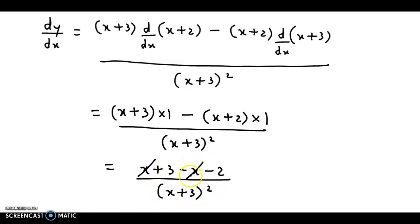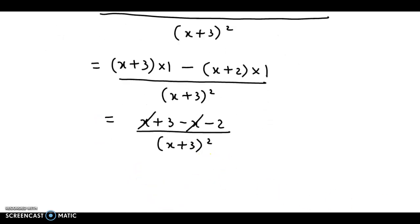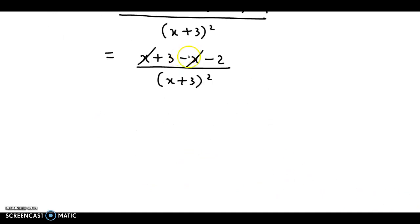So x and -x cancel out. So finally we have 3 - 2, that is 1 upon (x+3)². So this is the value for dy/dx.